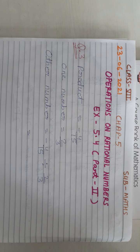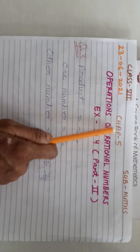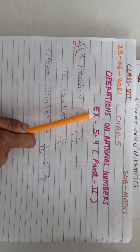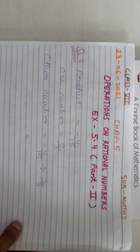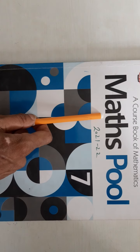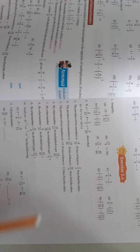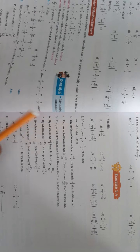Good morning students. I am your maths teacher and today I will teach you maths of class 7. We continue chapter 5, operations on rational numbers, and today we do exercise 5.4 part 2. Now see in the book — this is your maths book, class 7. Open exercise 5.4, page number 47. Today we do question number 3.